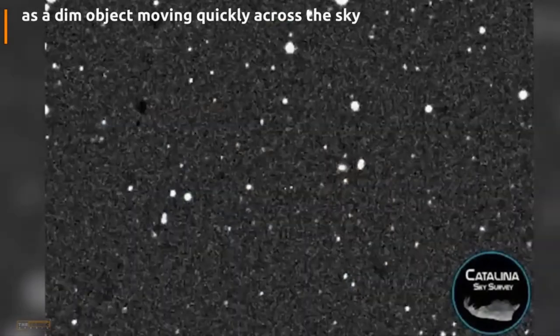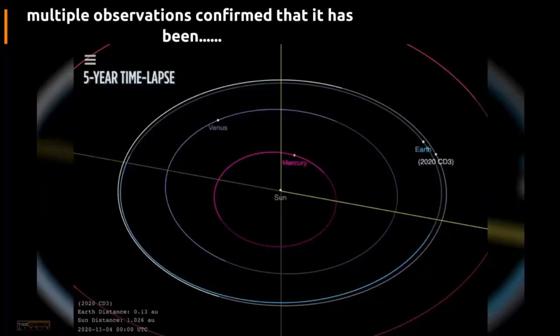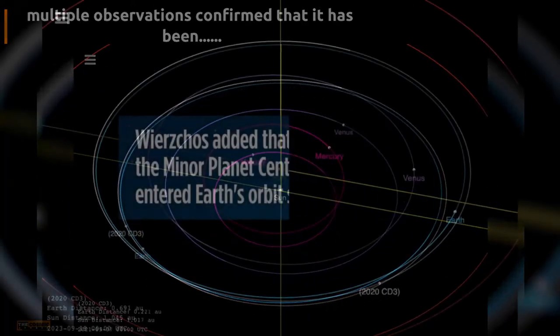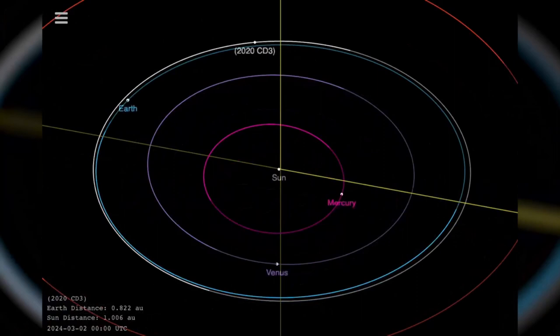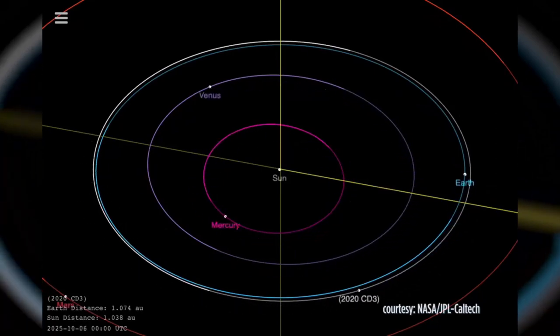2020 CD3 merupakan asteroid kedua yang memasuki orbit bumi. Sebelumnya ada 2006 RH120 yang juga ditemukan oleh Catalina Sky Survey. Asteroid ini mengelilingi bumi selama 18 bulan dari 2006 hingga 2007.